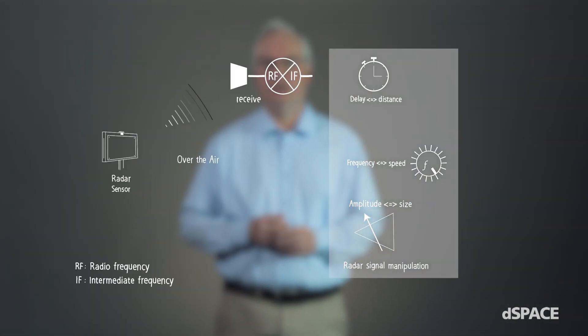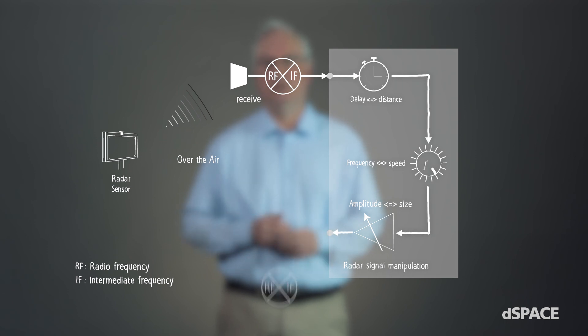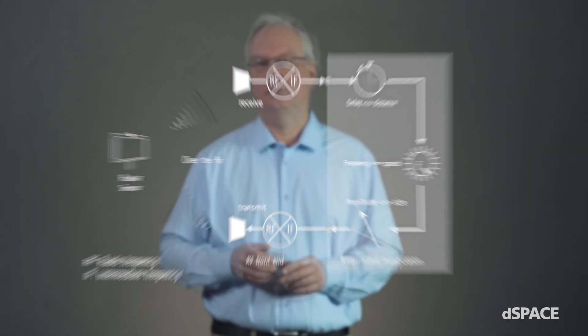The DARTS module picks up the radar signal from the sensor, generates an internal corresponding echo, and transmits it back to the sensor under test. By controlling the delay, frequency, and amplitude of the signal, the output signal matches the calculated and intended distance, speed, and size of the simulated object.